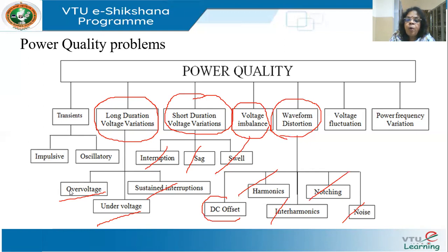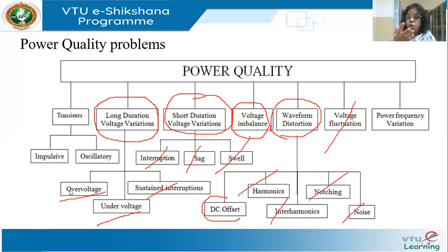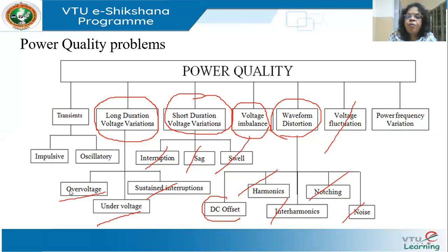Then I have voltage fluctuation. Many of us are familiar with lights and bulbs flickering on and off. Sometimes even your refrigerator goes because power comes on and off — rapid variations in the voltage. Then we have power frequency variation. Frequency variation is over a larger area; this is not just on the distribution side. Transmission and generation also play a role in frequency variations.